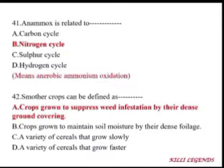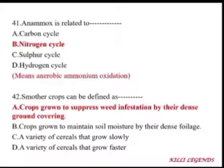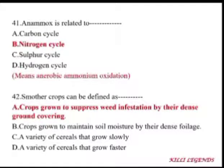A smothering crop is a crop grown to suppress weed infestation by dense ground coverage. Examples include cowpea, maize, and sugarcane. After initial growth, these crops cover the ground completely, leaving no space, light, water, or nutrients for weeds to grow.